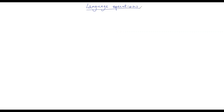In this video we will have an alphabet sigma and two languages L and K over sigma. In other words, L and K are subsets of sigma star. I will now define a number of operations on L and K.